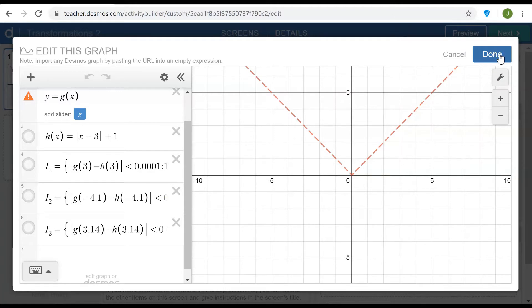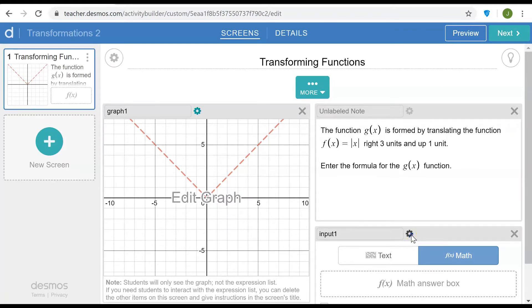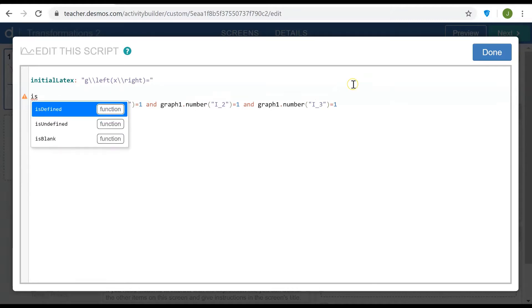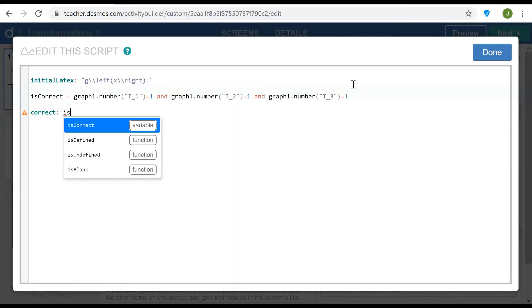Those three numbers are then accessed in the computation layer script of the input here to signal that the correct entry was produced. I'd like to start by altering this slightly. It's possible to create variables and I'd like to create an isCorrect variable. So if I type isCorrect and then equals, I'm going to cut this expression from here and use it to define the isCorrect variable and then type isCorrect.